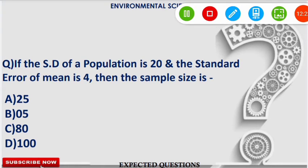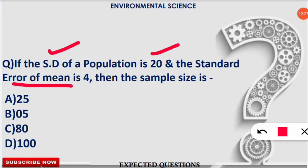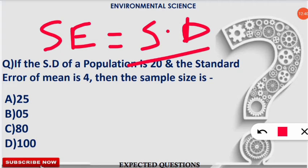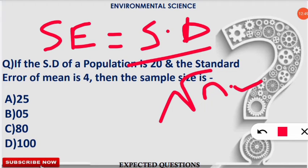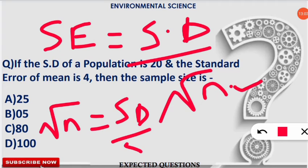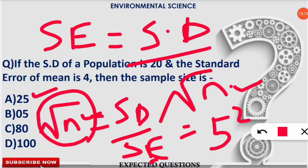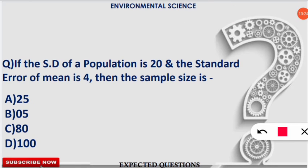The next question: if the standard deviation of a population is 20 and the standard error of the mean is 4, what is the sample size? The formula is: Standard Error = Standard Deviation ÷ √n. Rearranging: √n = 20 ÷ 4 = 5, so n = 5² = 25. The correct option is 25. Remember: Standard Error = SD ÷ √n.